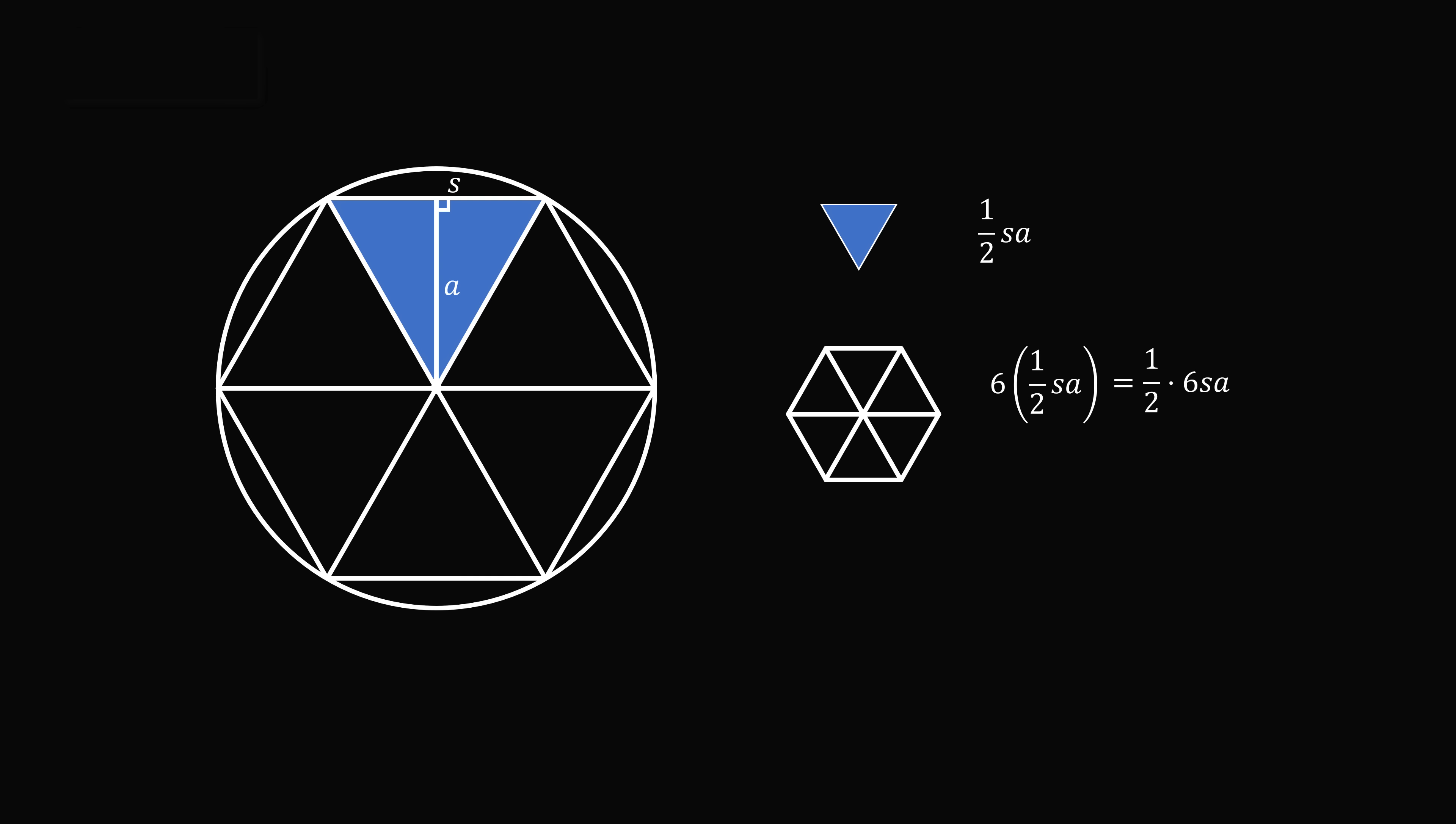In order to get the area of the entire hexagon, we need to multiply this by six. So we have six multiplied by that area, which can be rewritten as one half times six s a. But we know in this hexagon, six times s will be equal to the perimeter of the hexagon. So we can substitute that this is equal to one half times the perimeter times a.